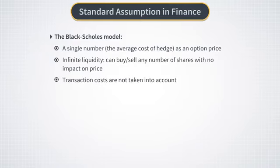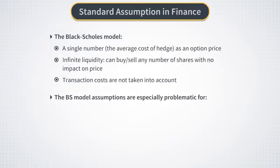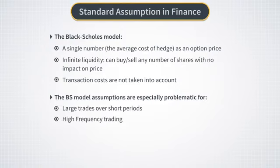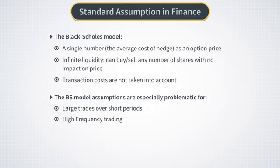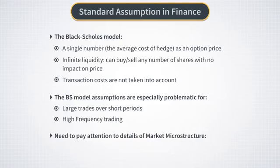Also, this model doesn't take into account transaction costs. In the course on reinforcement learning we looked into how to bring risk of mishedging back into option pricing, and we also mentioned that in certain regimes the assumptions of the Black-Scholes model about the market become especially problematic. Two such cases would be very large option trades and high frequency trading. In both cases, non-vanishing market impact and finite market liquidity become critical factors.